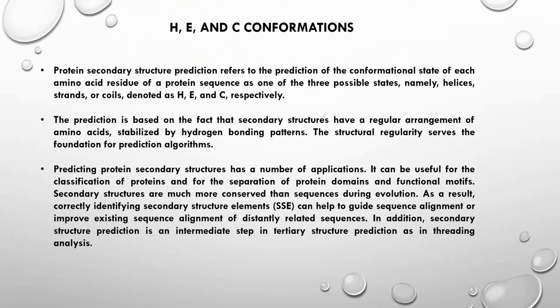Protein secondary structure prediction refers to predicting the conformational state of each amino acid residue as one of three states: H for helix, E for strand, and C for coil. The prediction is based on the fact that secondary structures have a regular arrangement of amino acids stabilized by hydrogen bonding patterns, both in alpha helices and beta strands. This structural regularity serves as the foundation of prediction algorithms, since the bonding patterns set a basis for the algorithms we have developed.